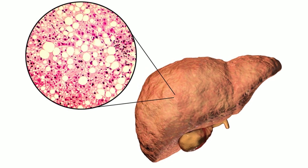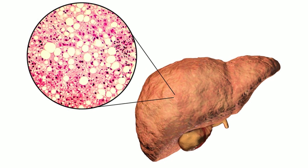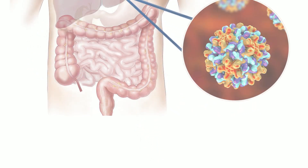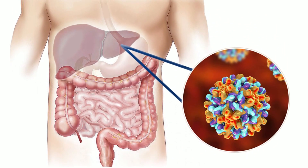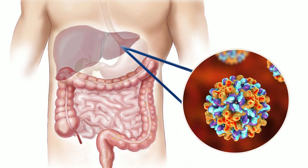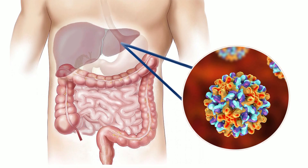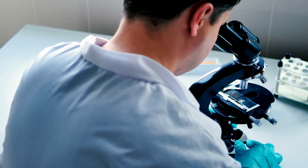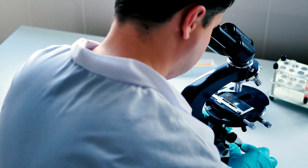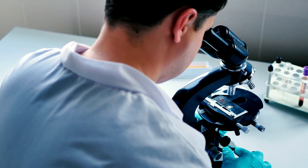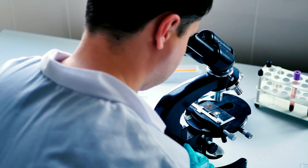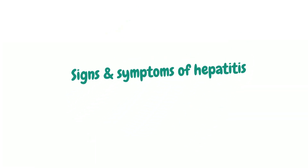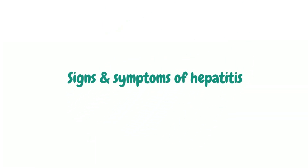Infection, viruses, chemicals, drinking alcohol, or using other drugs, among other things, can result in hepatitis. The many types of viral hepatitis are given names based on alphabet letters — hepatitis A, B, C, D, and E are some of them. While all of these viruses affect the liver, they are spread in different ways and have different treatments.